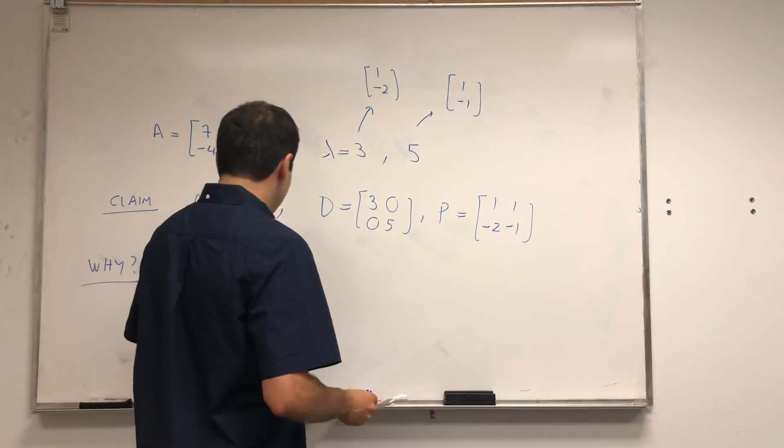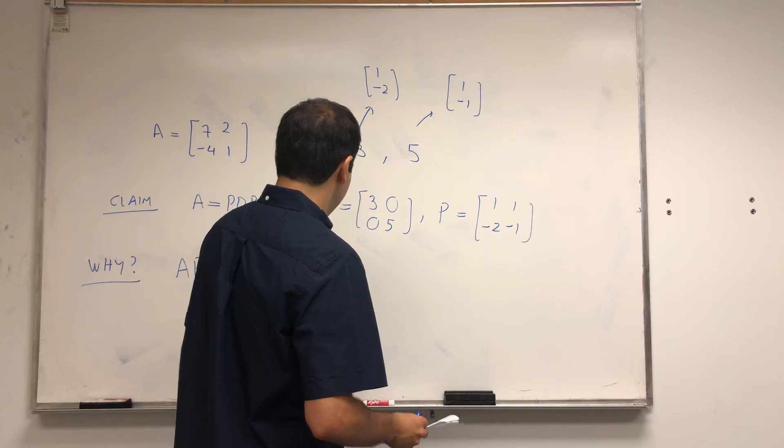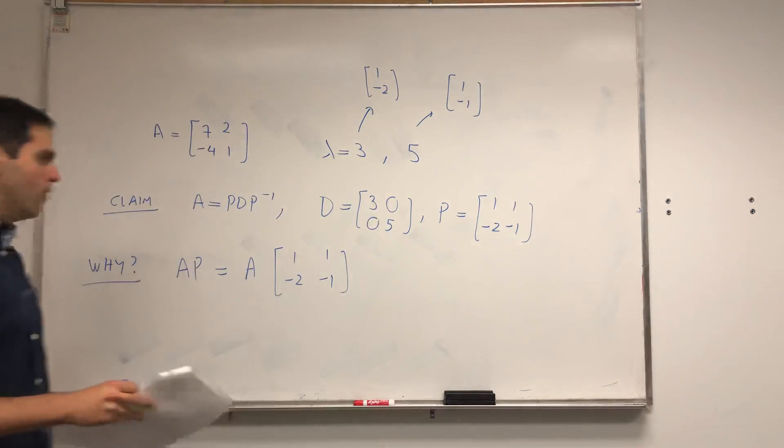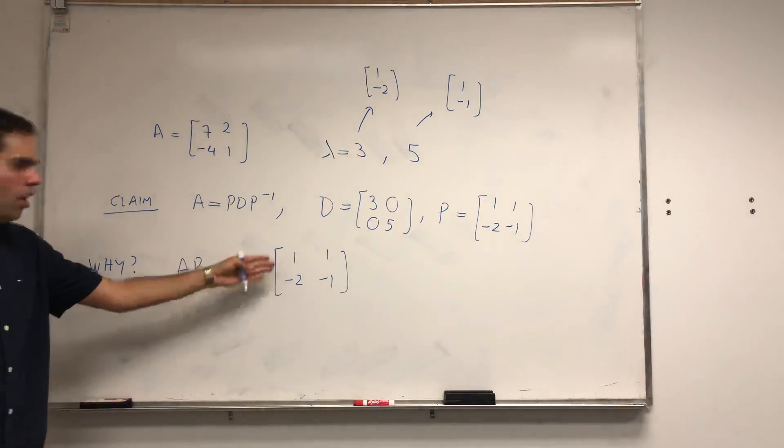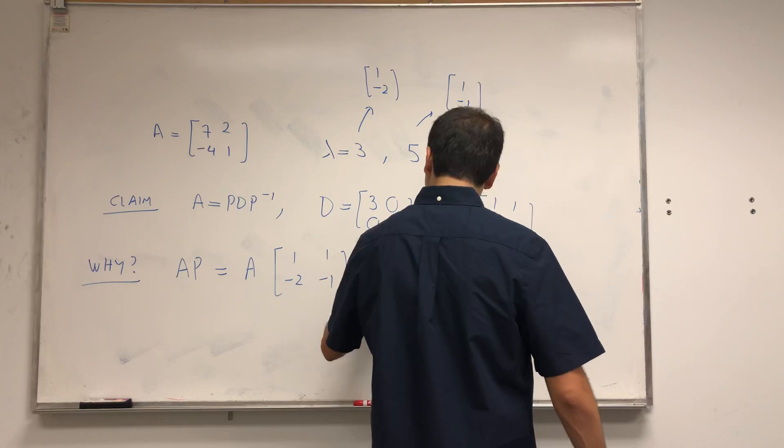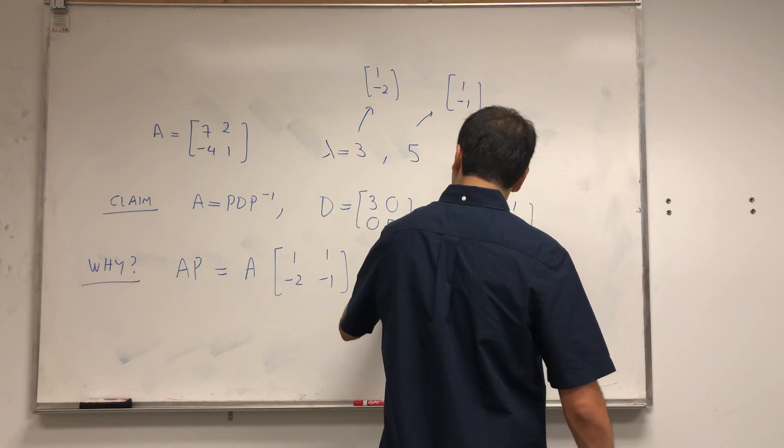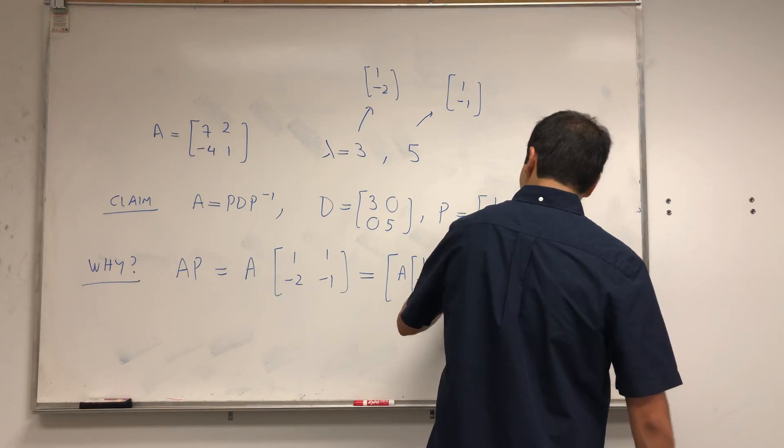That's A of [1, -2; 1, -1]. And one nice thing about matrix multiplication is that it's enough to just multiply each column by A. So this is actually the same thing as A of [1, -2], A of [1, -1].